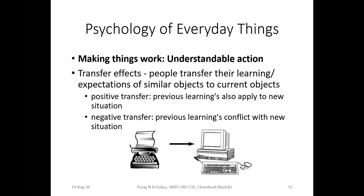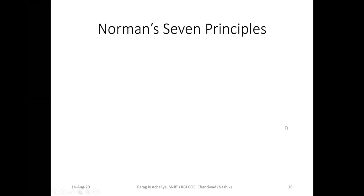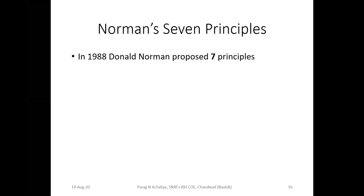Today we will see the further part of unit number one. The next point is Norman's seven principles. There was a scientist Donald Norman who proposed seven principles in 1988.